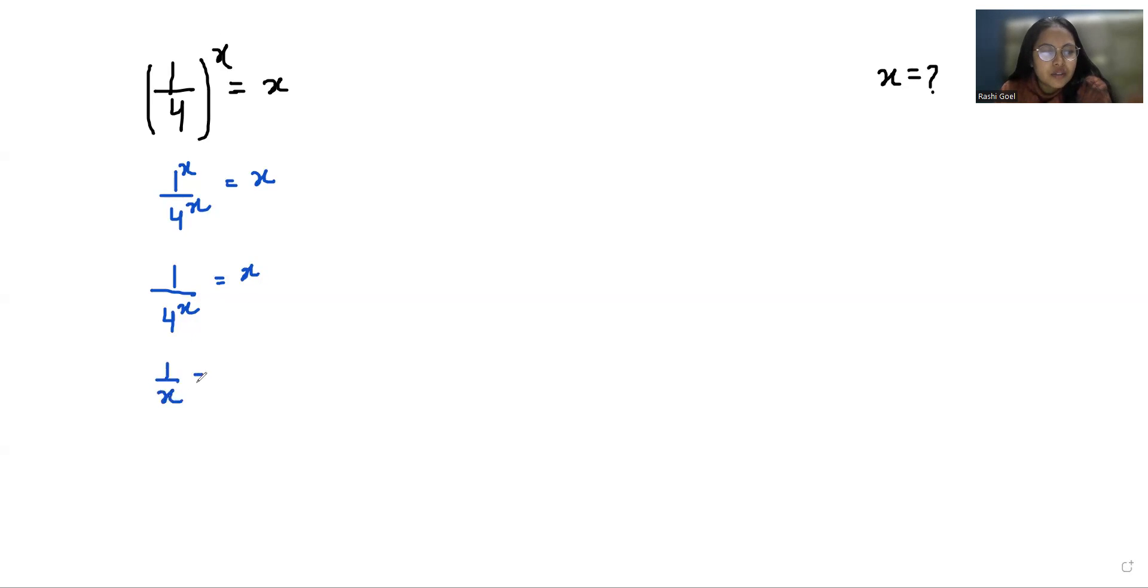Now I'm going to raise both sides to the power of 1/x, so it will cancel. (1/x)^(1/x) = 4^x raised to the power 1/x.